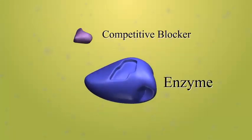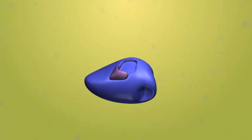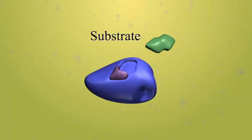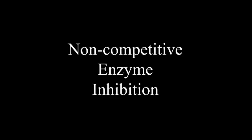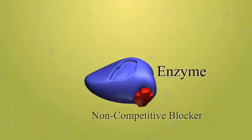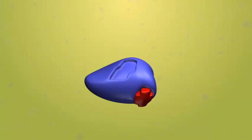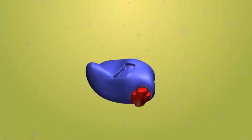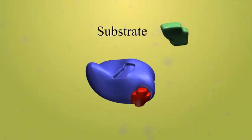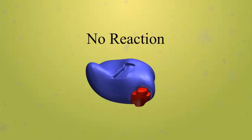Competitive inhibition occurs when an enzyme encounters a blocker which mimics the properties of the substrate and binds to the enzyme's active site. Thus, when the substrate is encountered, the active site is not available for attachment and no reaction will occur. Non-competitive enzyme inhibition involves the binding of a blocker to the enzyme away from the active site. This binding causes a conformational change in the enzyme, altering the shape of the active site, which prevents the substrate from binding. No reaction will occur as long as a non-competitive blocker is bound to the enzyme.